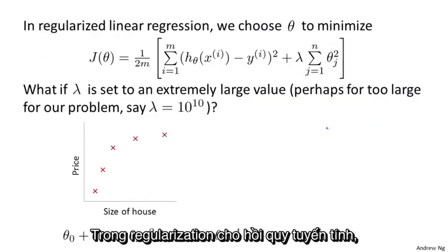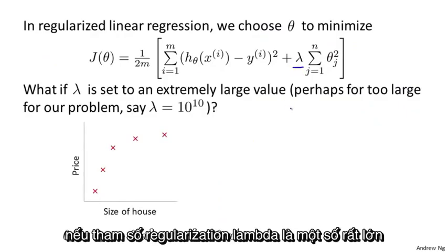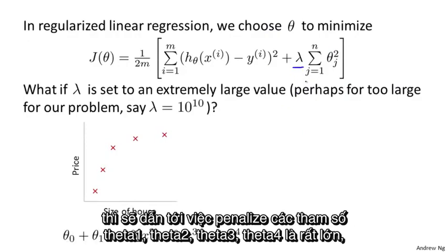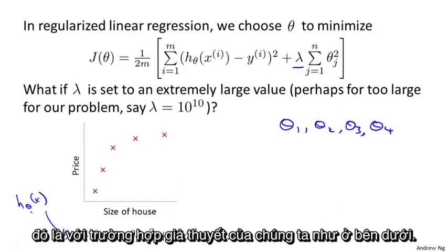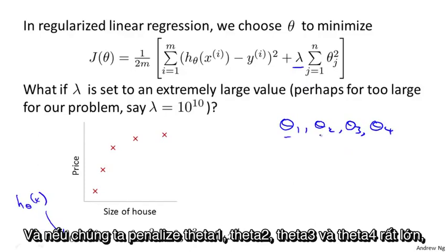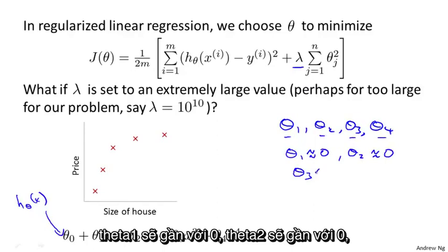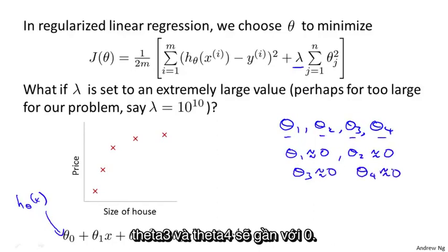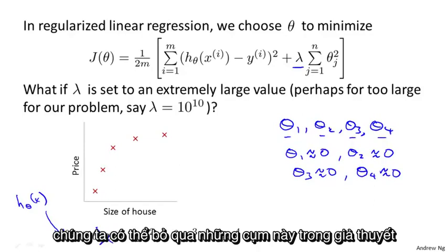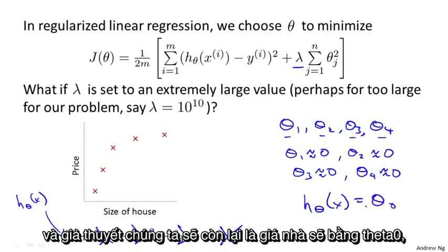In regularized linear regression, if the regularization parameter lambda is set to be very large, then what will happen is we will end up penalizing the parameters theta 1, theta 2, theta 3, theta 4 very highly. That is, if our hypothesis is this one down at the bottom, and if we end up penalizing theta 1, theta 2, theta 3, theta 4 very heavily, then we'll end up with all of these parameters close to zero. Theta 1 will be close to zero, theta 2 will be close to zero, theta 3 and theta 4 will end up being close to zero. And if we do that, it's as if we're getting rid of these terms in our hypothesis, so that we're just left with a hypothesis that looks like that.